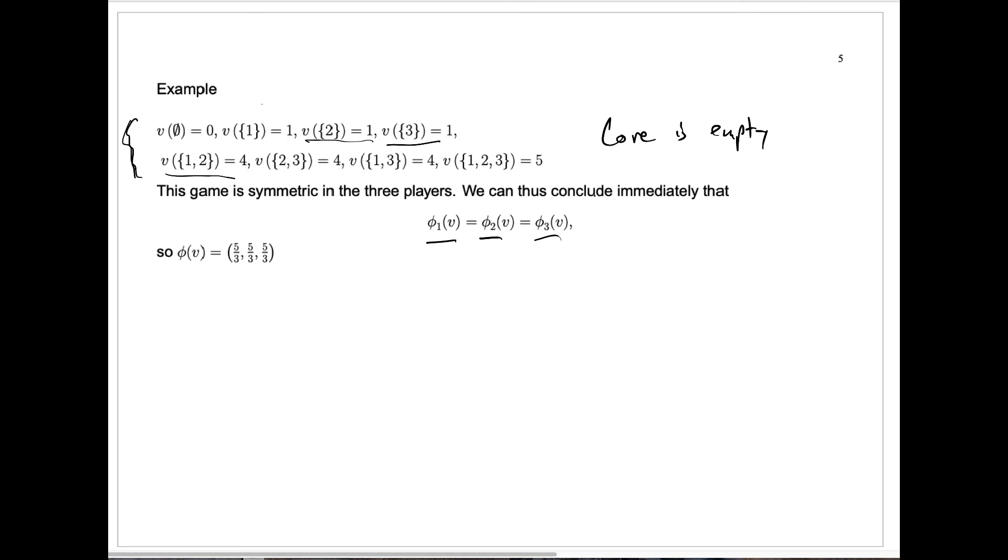And of course, by efficiency, we need the sum of those to be the highest total, which is five. And so the only way to have the three entries be equal and sum to five is to have each one be five thirds. So this is the unique Shapley value for this particular game.